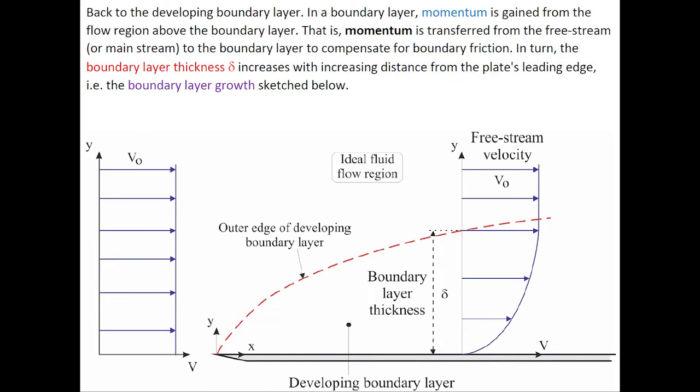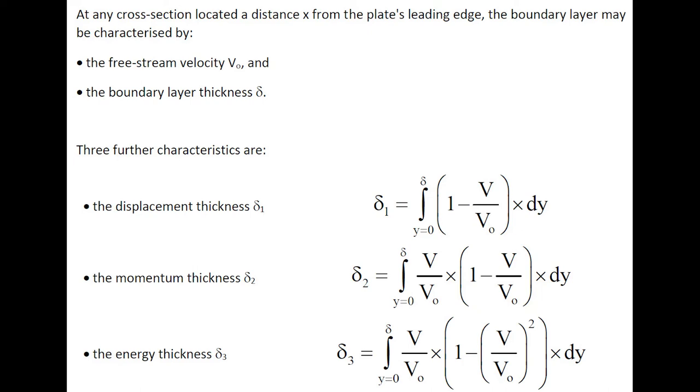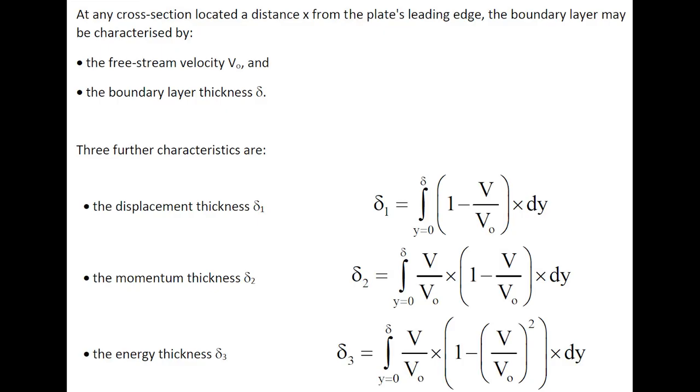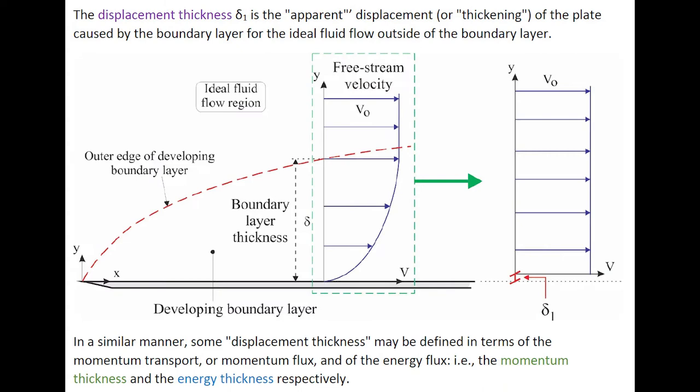At any cross-section located at distance x from the plate leading edge, the boundary layer may be characterized by its free-stream velocity and boundary layer thickness. Three further characteristics are the displacement thickness, the momentum thickness, and the energy thickness.